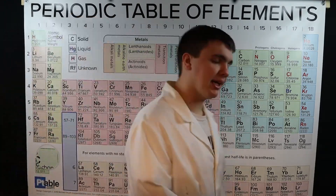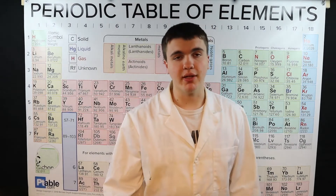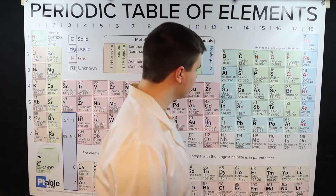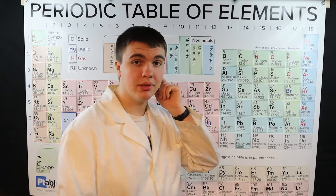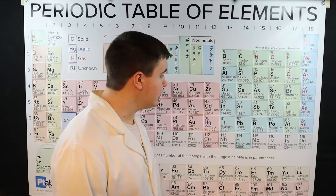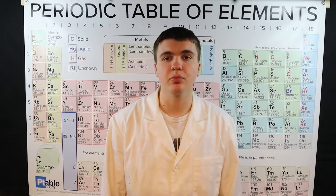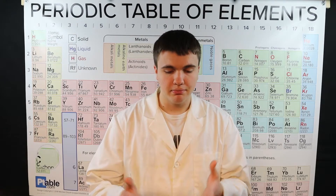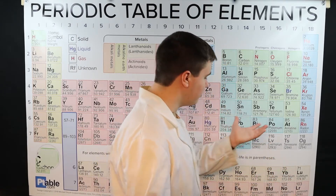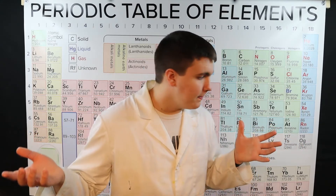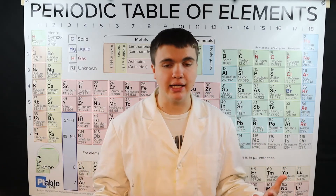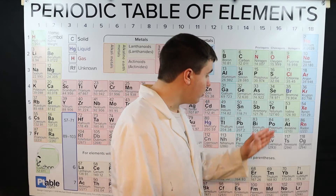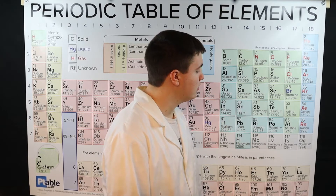The last metalloid we know of is polonium. It's named after Poland. It's only used in specific applications in antistatic brushes, because it generates an area of ionized air around the atoms it's bonded to — due to its radioactivity. If you got enough of it in one spot, because it ionizes the air, it would glow. You really don't want to get a lot of this stuff because it will kill you.